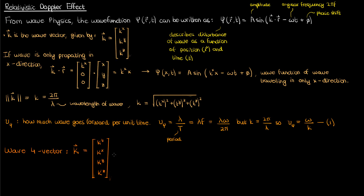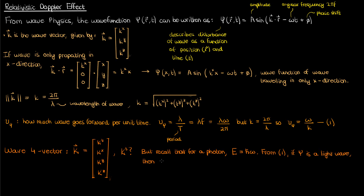The problem is that we don't yet have an expression for the K-superscript-t component, but we can find it using some quantum physics — this is more of a motivation than a formal derivation. In quantum physics, the energy of a photon is related to its angular frequency omega by E equals h-bar times omega, where h-bar is the reduced Planck's constant h over 2pi. From equation 1, since the wave we're considering is light, the speed of light relates omega and k by c equals omega over k, which means omega equals k times c. Substituting into the energy equation, the energy of a photon is h-bar times c times k. Isolating k gives k equals E over h-bar times c, and I'll call this equation 2.